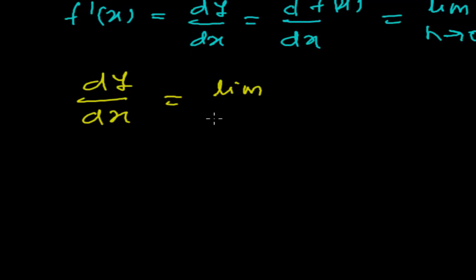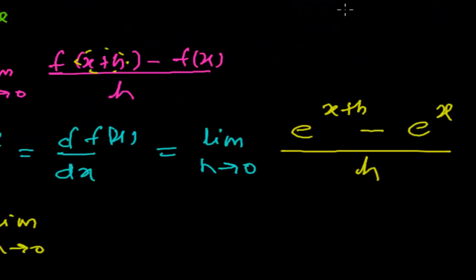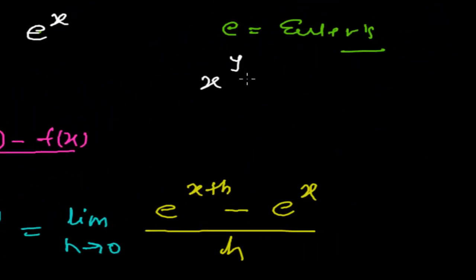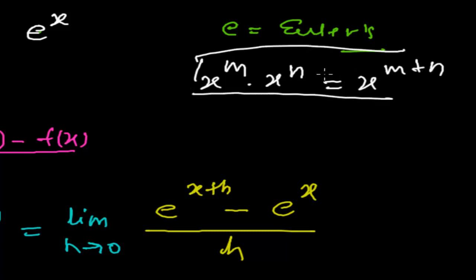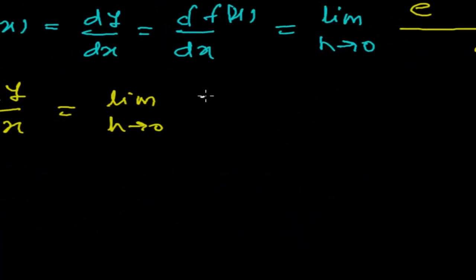Now let me remind you of an algebra rule: x to the power m times x to the power n equals x to the power m plus n. I'm going to use this concept here. So e to the power (x plus h) can be written as e to the power x times e to the power h — splitting the exponent into a product.